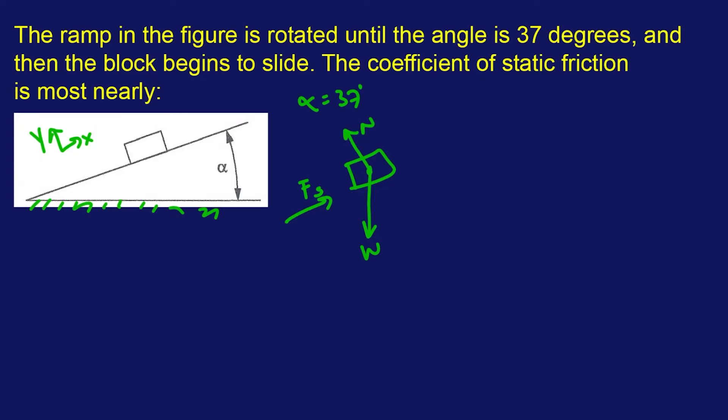So we're gonna call it FS, going along the ramp in the opposite direction of potential movement. We also know this angle is alpha, and then some fancy geometry will tell you that this angle relative to the normal of the ramp between the weight force is alpha. Hopefully I said that correctly. So let's start off with our sum of the forces in the x direction. Call that direction positive, so FS is going to be positive in this case.